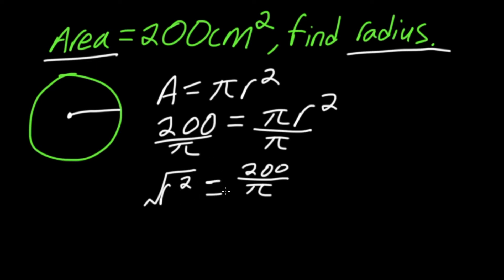What we do to one side, we also have to do to the other. So we'll take the square root of this side as well. That will give us r = √(200/π).